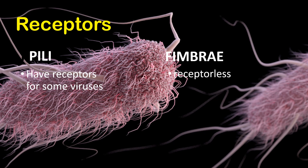Regarding the presence of receptors on the bacterial cell: pili have some receptors for viruses. On the other hand, fimbriae are receptor-less.